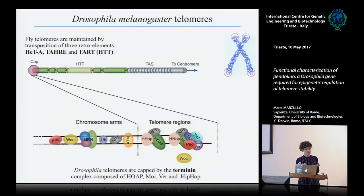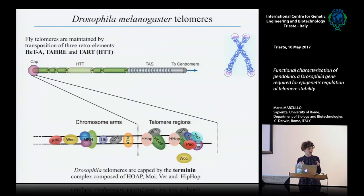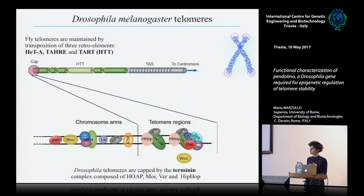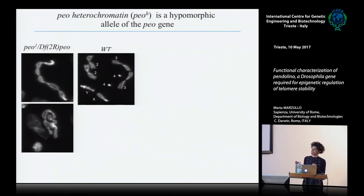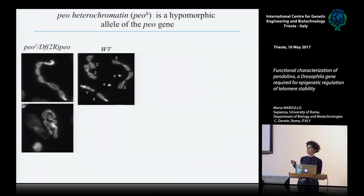Drosophila is a really powerful model for the analysis of proteins involved in chromosome stability because it is possible to analyze the Drosophila karyotype through the analysis of larval neuroblasts. Mutations in all these factors cause telomere fusions. Through the analysis of larval neuroblasts, we identified this new gene Pendolino, whose mutations cause a high frequency of telomere fusions involving all chromosomes, forming structures that resemble trains of chromosomes. This is the wild-type karyotype of Drosophila, which is composed of four pairs of chromosomes.